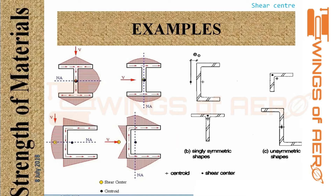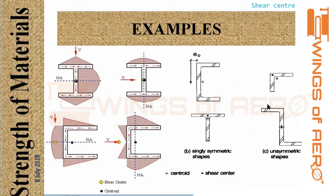Here are examples for I-section, channel section, T-section, Z-section, and L-section. For the I-section with two lines of symmetry, the shear center and centroid coincide. For the channel section (open section), the shear center lies outside. For the T-section with one line of symmetry, the shear center lies at the junction of the two legs. For the Z-section, the shear center lies on its line of symmetry. These examples are frequently asked in civil and aeronautical engineering competitive exams.